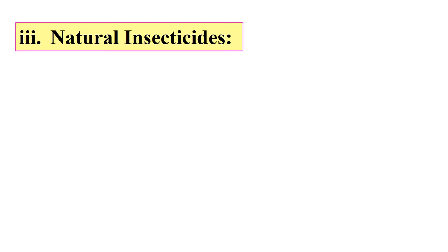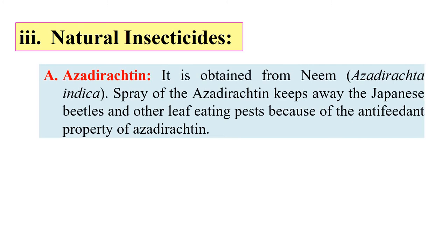Examples of natural insecticides include Azadirachtin, obtained from neem, whose botanical name is Azadirachta indica. A spray of Azadirachtin keeps the Japanese beetle and other leaf-eating pests away, as they are unable to feed when this compound is present.